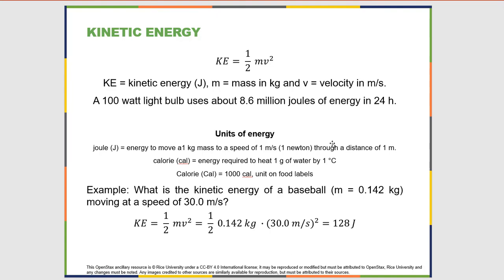When we talk about thermal energy or temperature, we basically want to look at kinetic energy. Kinetic energy is the energy of motion, and it has a unit of a joule. It equals one-half mv squared, where m is the mass in kilograms and v is the velocity in meters per second. To give some perspective, an old incandescent 100-watt light bulb uses about 8.6 million joules of energy in 24 hours. So a joule is a relatively small amount of energy. There are several units of energy, some of which you're probably more familiar with, like calorie.